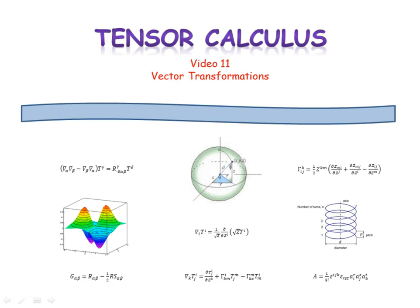This is video 11 of tensor calculus. Back in video 6 we learned how to transform coordinate values from one system to another. In this video we're going to learn how to transform vectors from one coordinate system to another. And in the process we're going to learn why the basis vectors we've been talking about in the last two videos are called covariant basis vectors.